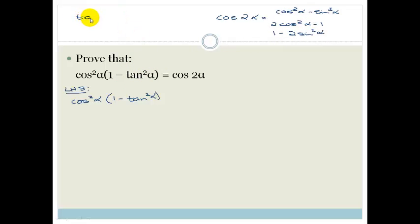But we know that tan theta is sin theta over cos theta. Therefore we can rearrange this and it becomes cos squared alpha times by 1 minus sin squared alpha over cos squared alpha.